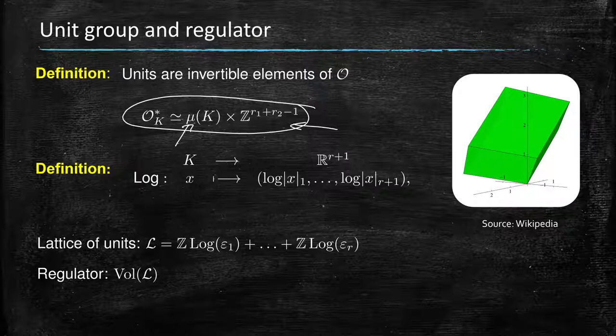...but not, of course, I mean it would be too easy. It doesn't tell you who are those generators. So you know what to expect in terms of the rank. The rank is given to you by the signature of your number field. You get that for free, but you do not get those generators that correspond to those torsion-free components.